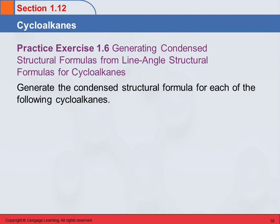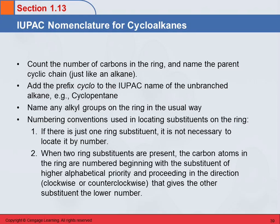Let's learn how to name cycloalkanes. Cycloalkanes are named in much the same way that straight-chain alkanes are. You count the number of carbons in the ring and name the parent cyclic chain. So if there are five carbons in the ring, it's pentane, and you put the prefix 'cyclo' in front of it to indicate that it's pentane in a circle.